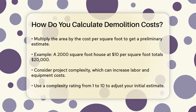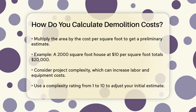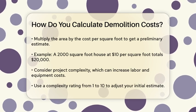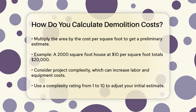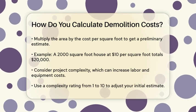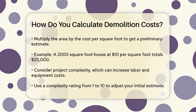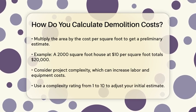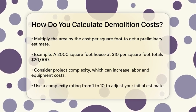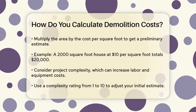However, this is just the starting point. You also need to consider other factors that can affect the cost. One of these is the complexity of the project. For instance, if the structure is tall or has complex architectural features, it will require more labor and equipment, increasing the cost. You can use a complexity rating — a factor between 1 and 10 — to adjust your estimate accordingly.